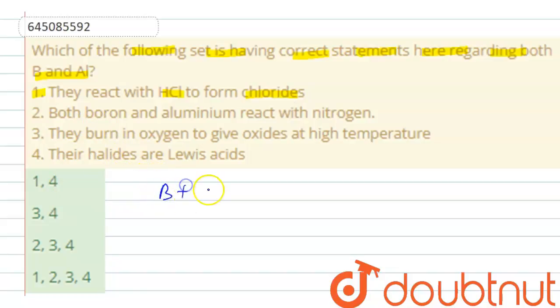So boron plus HCl gives no reaction, whereas aluminium reacts with HCl liberating hydrogen gas.